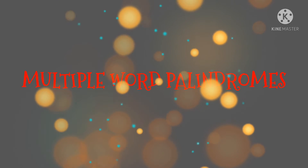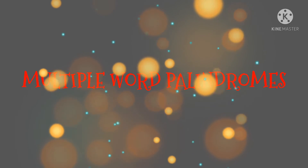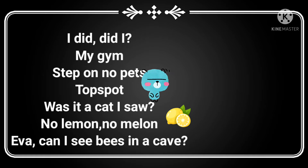Now coming to multiple word palindromes, we have: 'Did I do, did I do?', 'Step on no pets', 'Top spot', 'Was it a cat I saw?', 'No lemon, no melon', 'Can I see bees in a cave?' These are the multiple word palindromes.